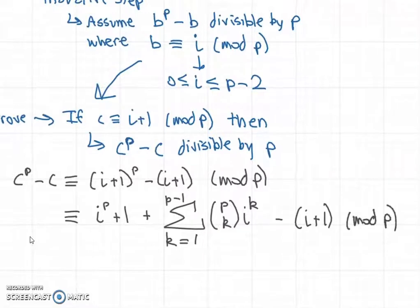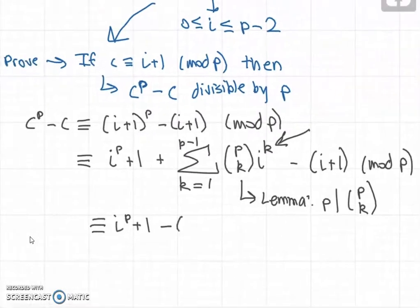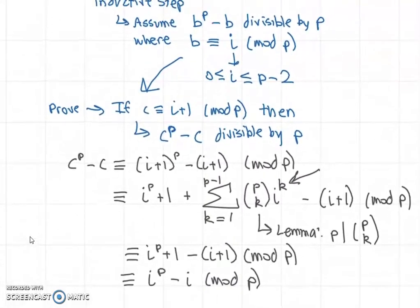We can remember from the lemma that p divides p choose k for all values of k between 1 and p minus 1. So this whole term is zero mod p—this entire sum. Now we have i^p plus 1 minus i plus 1 mod p. This is congruent to, so the ones cancel out, i^p minus i mod p.